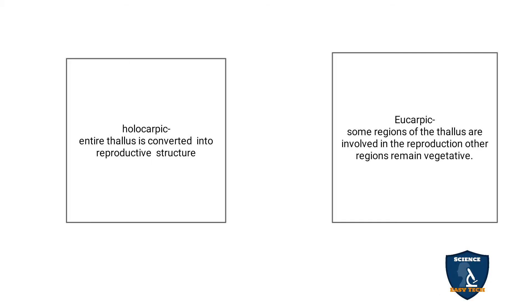Based on reproduction, there are two types: holocarpic and eucarpic. Holocarpic means the entire mycelium is involved in reproduction — 'holo' means full. Eucarpic means only some parts of the mycelium are involved in reproduction; other parts remain vegetative.